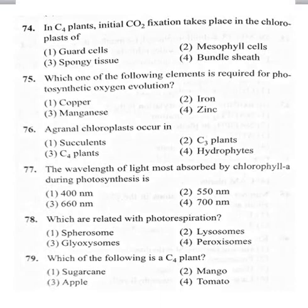78th bit: which organelles are related with photorespiration? Option 1 spherosome, option 2 lysosome, option 3 glyoxysomes, option 4 peroxysomes. There are mainly three organelles involved in photorespiration: chloroplasts, peroxysomes, and mitochondria. The correct option here is peroxysomes — 78th question, correct option 4.